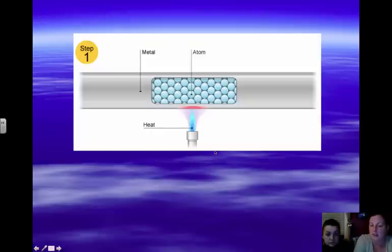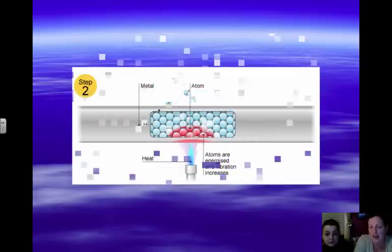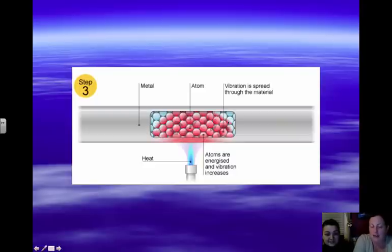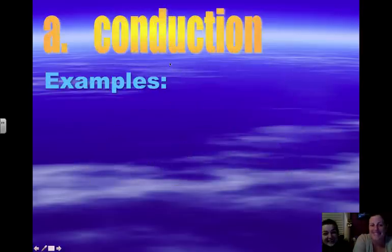If we look at this picture here, you can see it's heating the metal. Each of those little blue balls represents atoms of the metal. As they heat up, they vibrate against each other, spreading the heat across. The faster they vibrate, the more heat is being transferred through that metal.